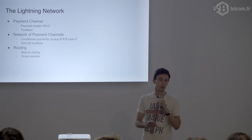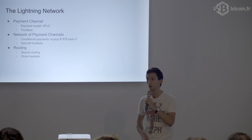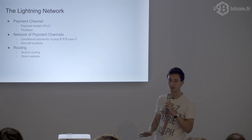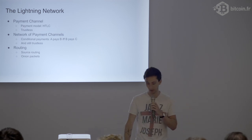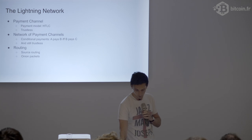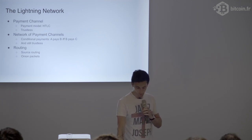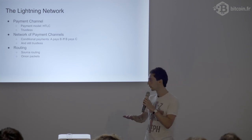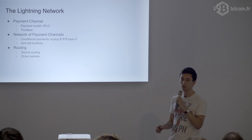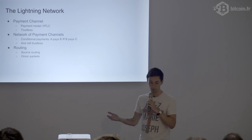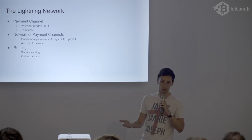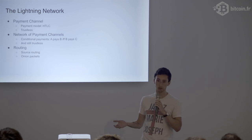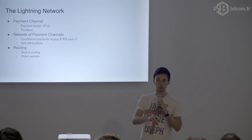The basic idea is that you don't need to publish every transaction. Instead of publishing everything to everyone, you publish only meaningful transactions to the blockchain and do a lot of things directly peer-to-peer. There are three main components in the Lightning Network we'll dive into: the concept of a payment channel with HTLCs, how payment channels form a network, and the cryptography behind routing and onion packets.